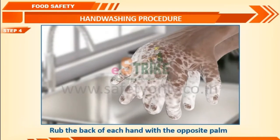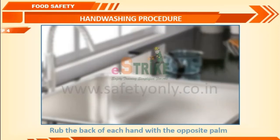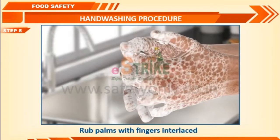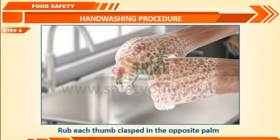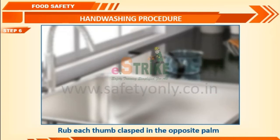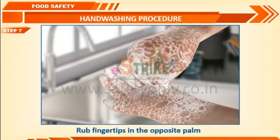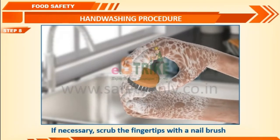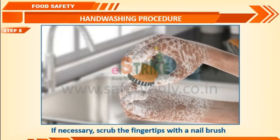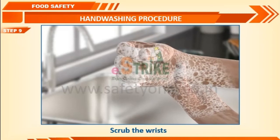Step 4 — Rub the back of each hand with the opposite palm. Step 5 — Rub palms with fingers interlaced. Step 6 — Rub each thumb clasped in the opposite palm. Step 7 — Rub fingertips in the opposite palm. Step 8 — If necessary, scrub the fingertips with a nail brush. Step 9 — Scrub the wrists.